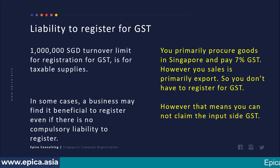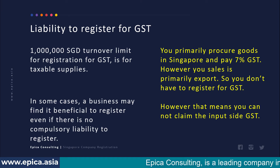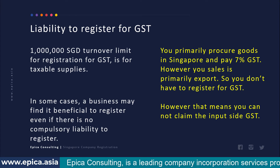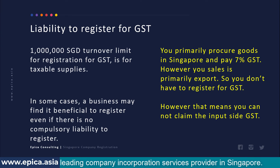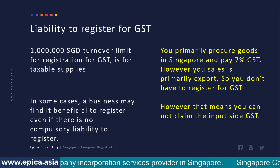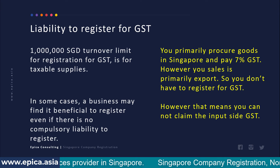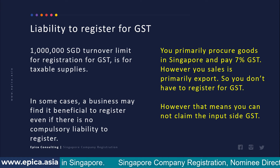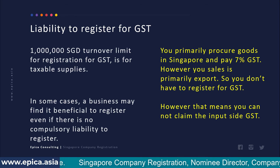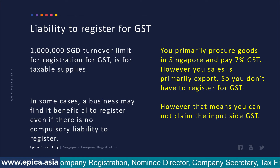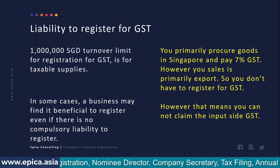What happens in this case is when you procure goods in Singapore you pay seven percent GST. But because the sales are primarily export, you don't have to register for GST. But if you don't register, the input side GST you cannot claim back from IRAS because you are not GST registered. So your cost is going to go up by seven percent, and that GST you paid on the input side you will have to absorb in your business.